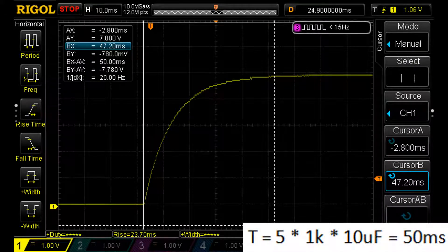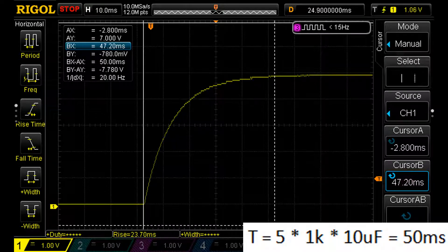Here is our scope and there's a pretty charging curve. I have already moved our cursors to 50 milliseconds, but look, can you see the capacitor hasn't actually finished charging yet? So what could that be?